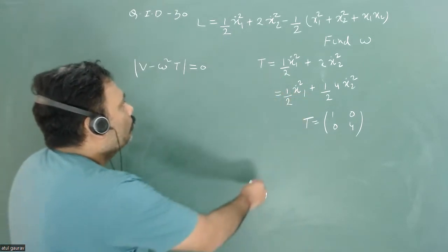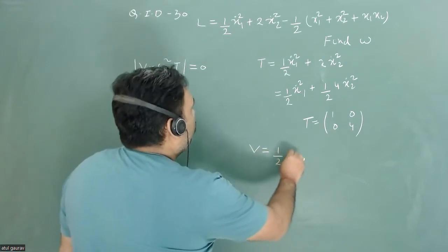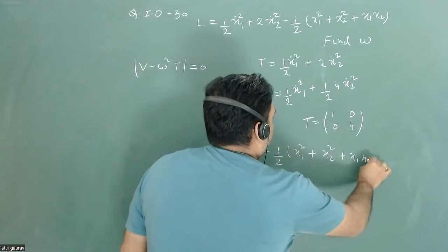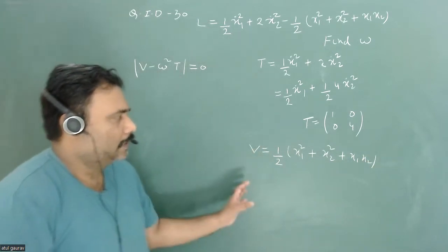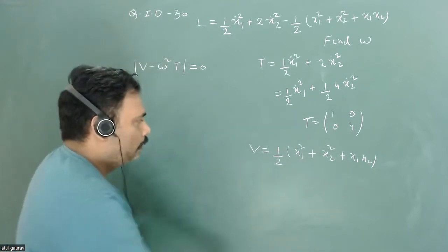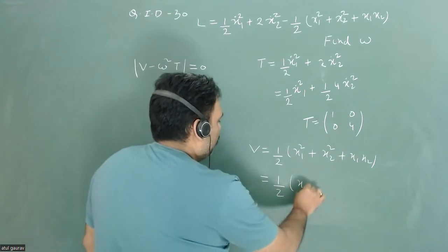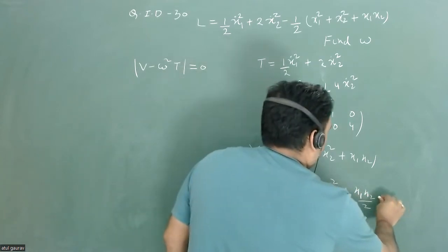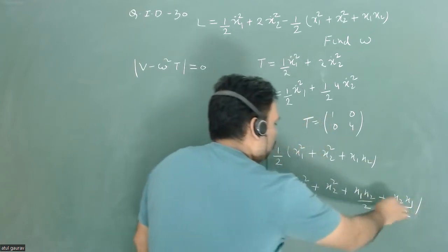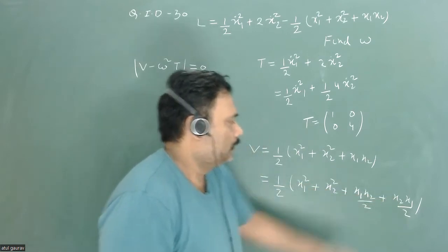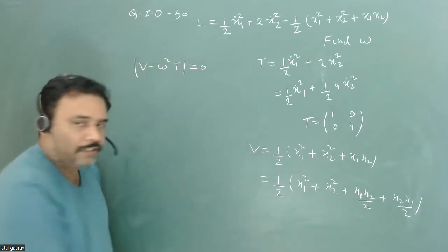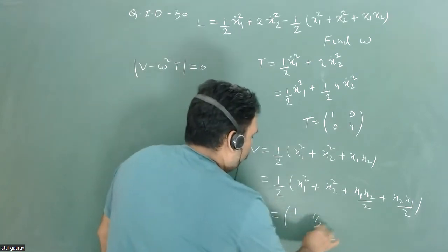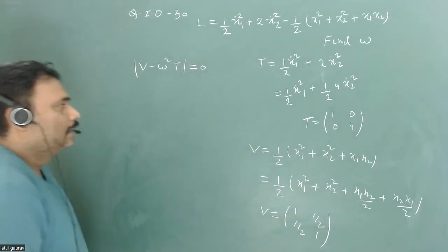For the potential energy: it is half times (x1 squared plus x2 squared plus x1*x2). Since the potential energy matrix must be symmetric, we symmetrize it by writing x1*x2 as (x1*x2)/2 plus (x2*x1)/2. The potential energy matrix V is therefore: [1, 1/2; 1/2, 1].